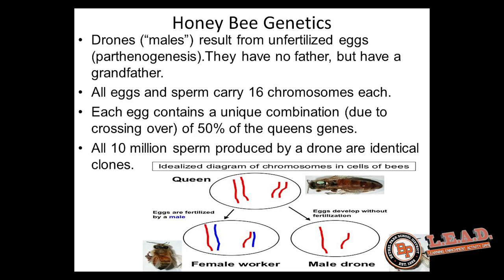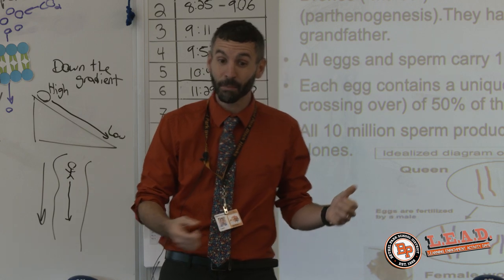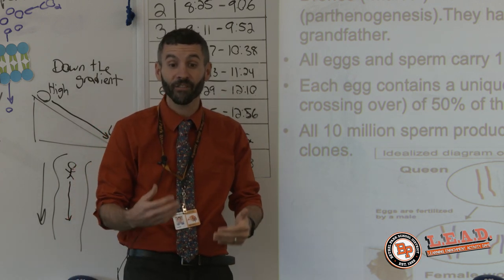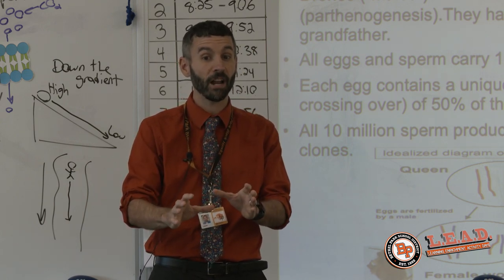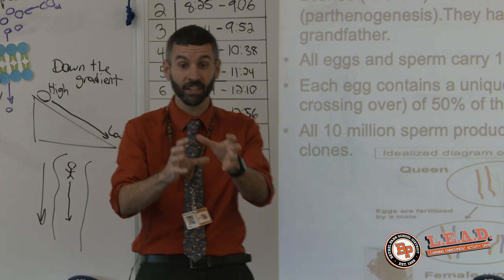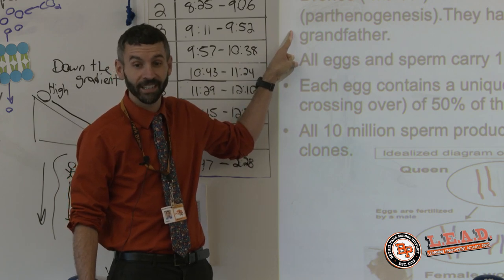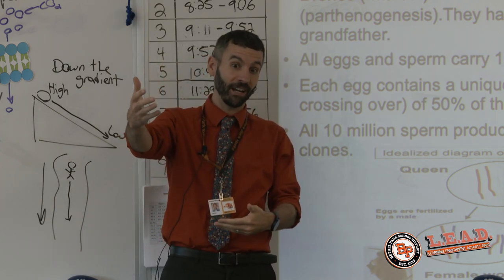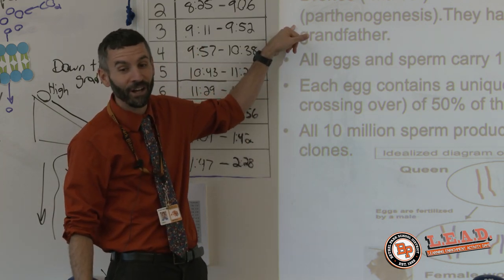The most interesting part about honey bees is their genetics. The drones — the males — are haploid; they only have half the normal number of chromosomes. Normal honey bees, the queen and females, have 32 chromosomes; the males only have 16. Imagine a human living with 23 chromosomes — not possible in humans, but bees can do it. The males are basically an unfertilized egg: the female lays an egg and does not fertilize it, so no sperm is involved. Therefore, male bees have no father, but they do have a grandfather, because the queen came from a male and a female two generations back.